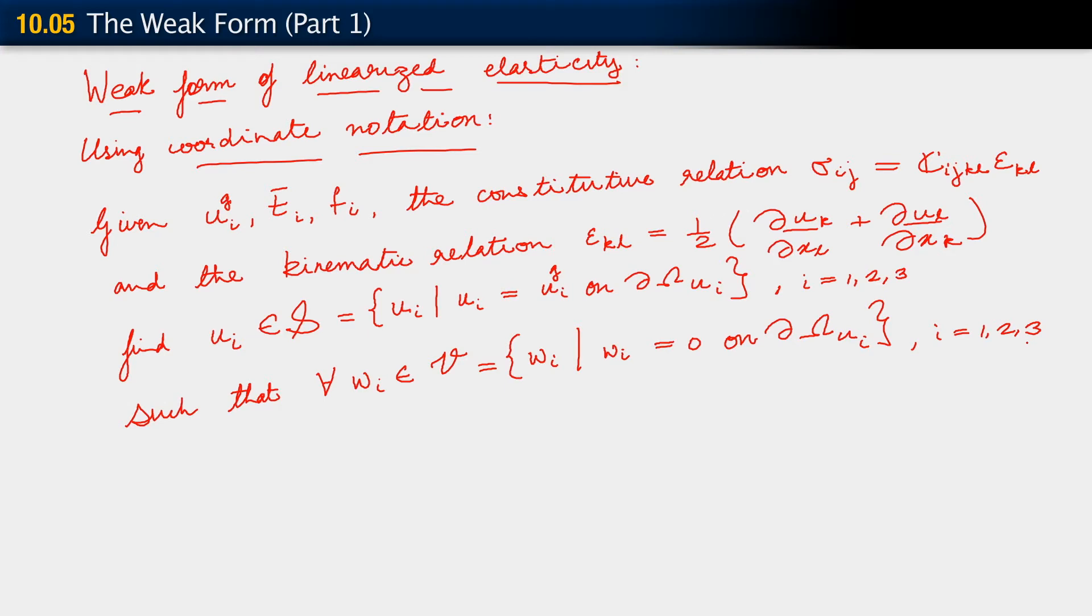What's implied here is i equals 1, 2, 3. Find u_i belonging to S of this type such that for all w_i belonging to V, which now consists of all functions which satisfy the homogeneous boundary condition on the corresponding Dirichlet boundary. Here too, we imply that i equals 1, 2, 3.